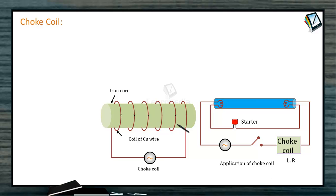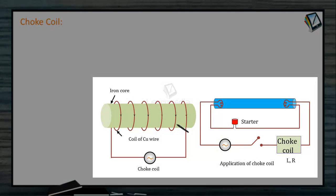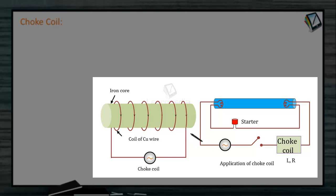A choke coil is a device which has high inductance and negligible resistance. It is used to control the current in an AC circuit and is used in a fluorescent tube. The power loss in the circuit containing a choke coil is the least. A coil with low resistance and high inductance can reduce the current in an AC circuit without appreciable heat loss. Such a coil is called a choke coil, and it is preferred because it does not dissipate power.